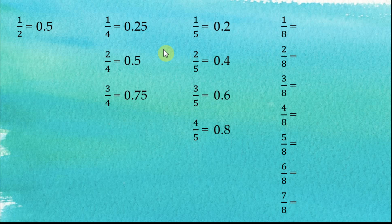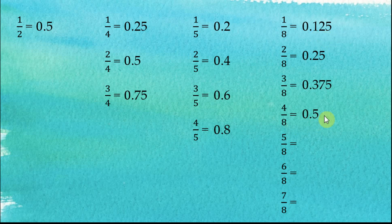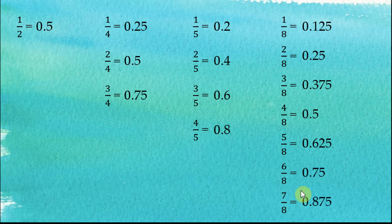1 over 8 is half of 1 over 4, and therefore it is equal to 0.125. 2 over 8 is equal to 1 over 4, so it is 0.25. 3 over 8 is 3 times 0.125, so it is 0.375. 4 over 8 is equal to half, so it's 0.5. 5 over 8 is 0.5 plus 0.125, therefore it is 0.625. 6 over 8 is equal to 3 over 4, and therefore 0.75, and 7 over 8 is equal to 0.875.